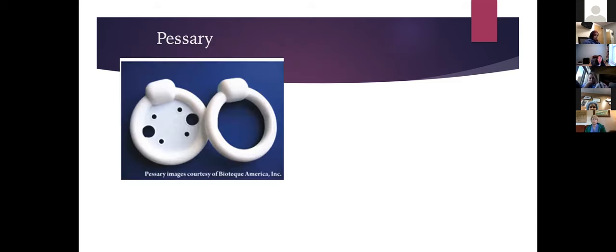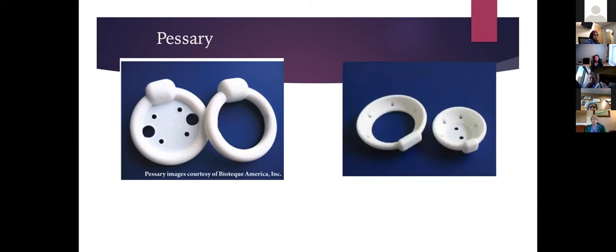Incontinence pessaries have a knob designed to sit under the urethra, creating that backstop support. They don't block the urethra but provide support during increases in abdominal pressure.